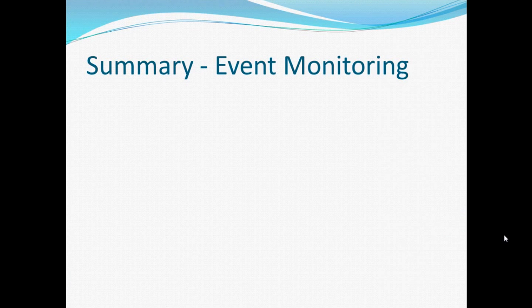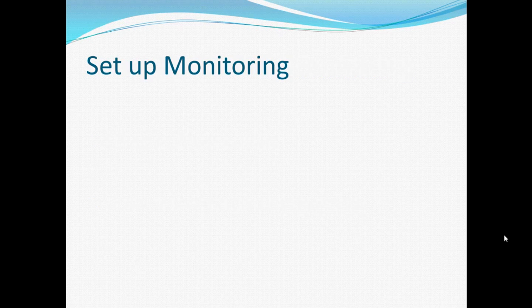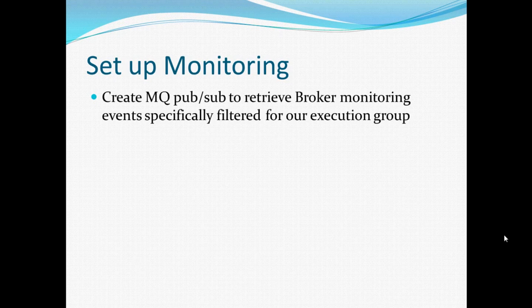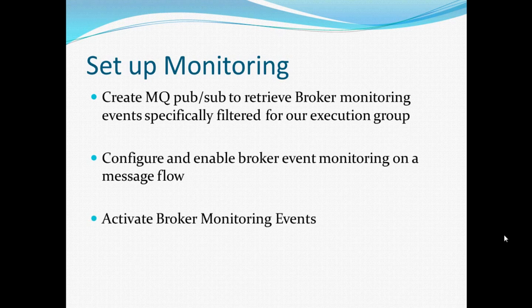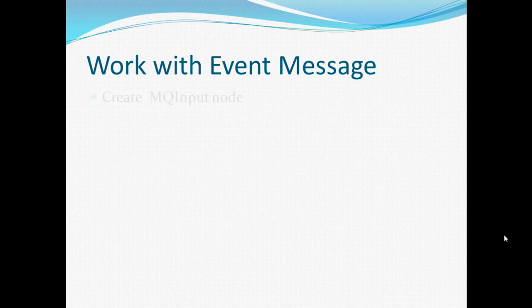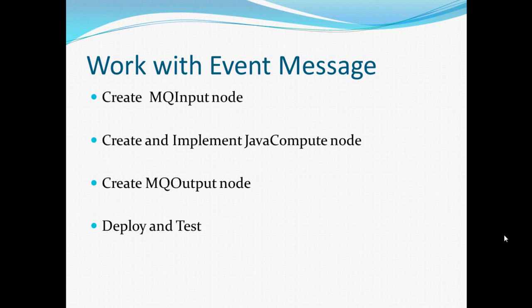In conclusion, we're going to go over the steps again on how to set up event monitoring in WebSphere Message Broker. The first thing we did is we set up monitoring on a flow, and after that we read and accessed the monitoring message XML. To set up monitoring, we created an MQ topic to publish broker monitoring events to, and we also created an MQ subscription to retrieve those publications on an MQ queue. Then we configured and enabled broker event monitoring on a message flow, and we activated broker monitoring events in the command console. To work with the event message, we created an MQ input node, we created and implemented a Java compute node, and we also created an MQ output node. Then we deployed it and we tested it.